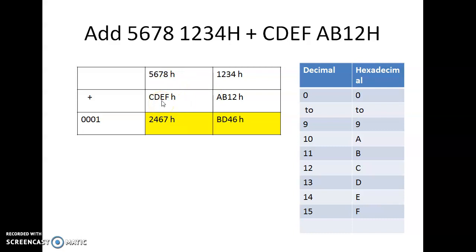20 divided by 16 gives a remainder of 4, so write 4 and carry 1 to the next level. C is 12, so 12 plus 5 plus 1 gives 18. Divide 18 by 16 and you get 1 remainder 2, so write 2 here and carry 1. So the final output is 2 4 6 7 B D 4 6 — that is how the microprocessor will show the output.